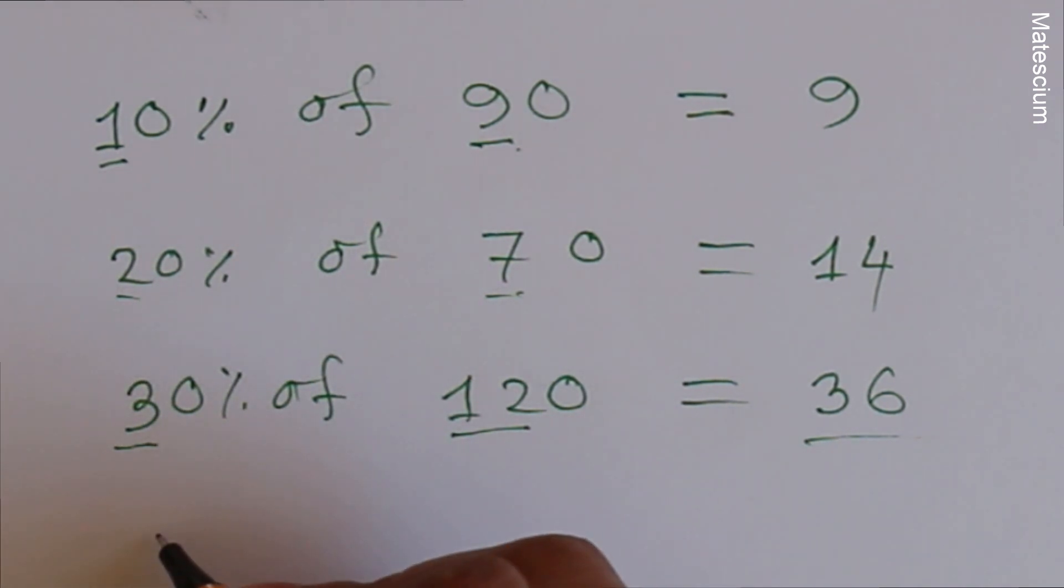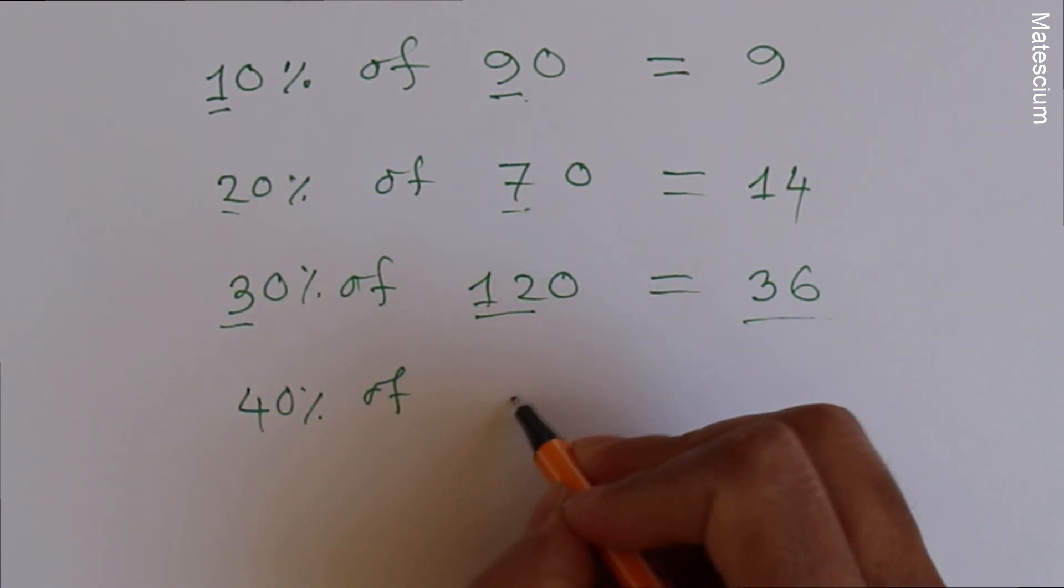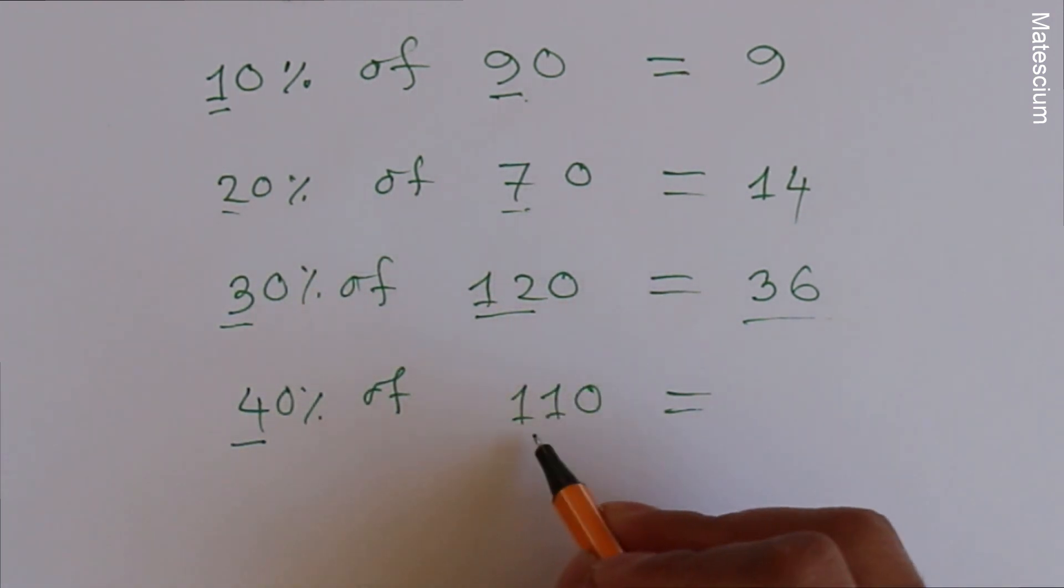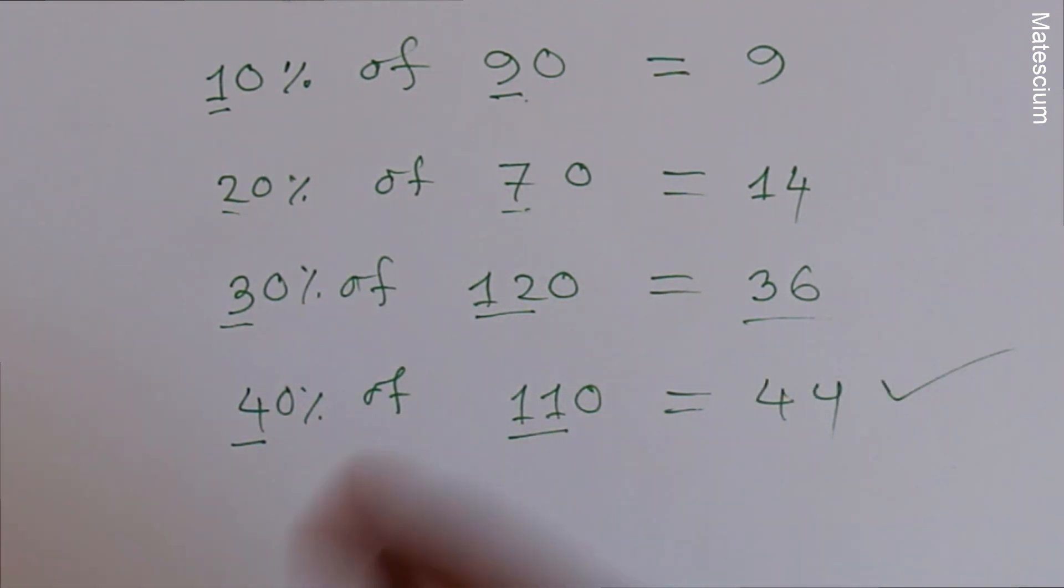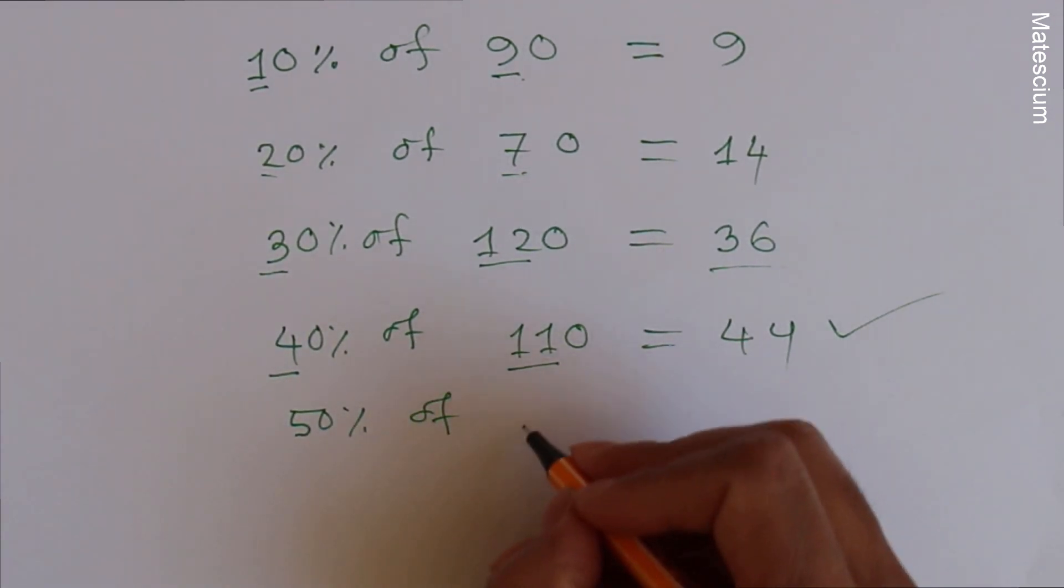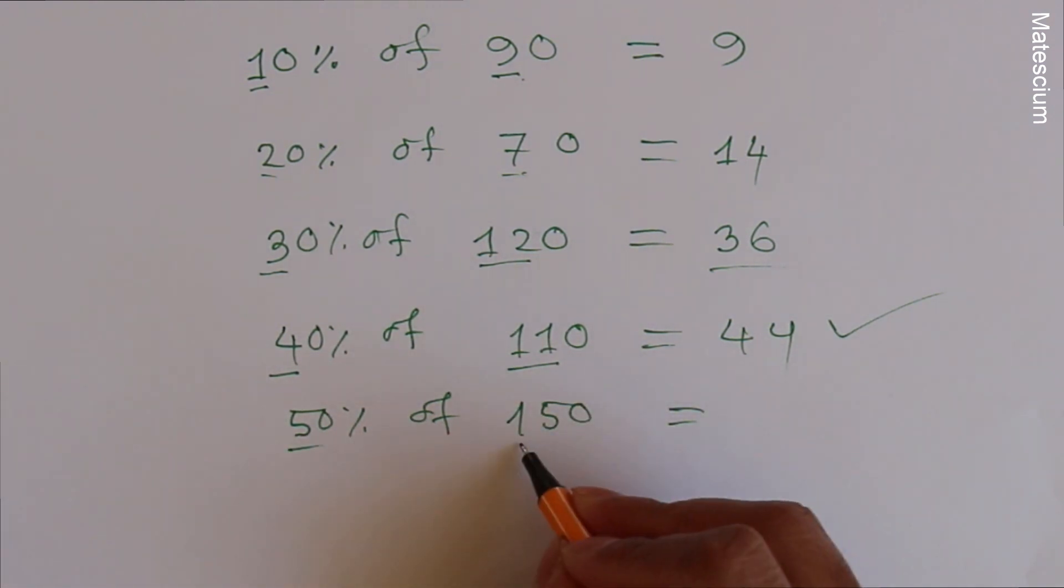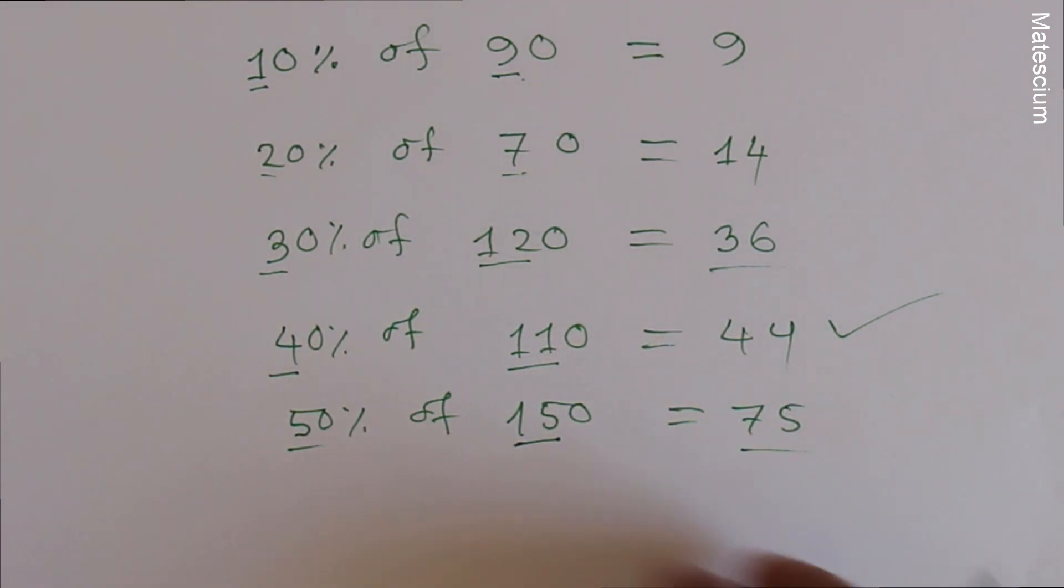40% of 110. Do the same thing, multiply 4 by 11. That means 44, yes this is the answer. Again, 50% of 150. Multiply 5 by 15 which is 75.